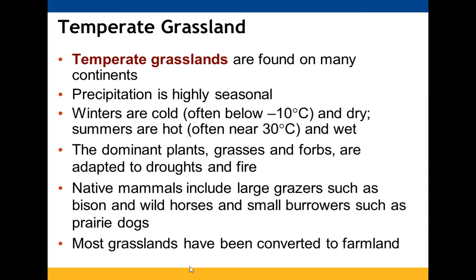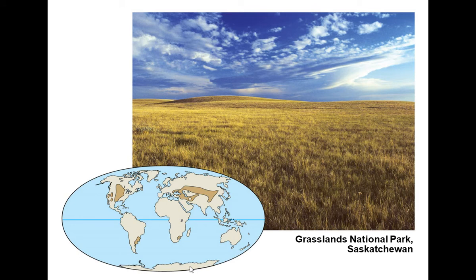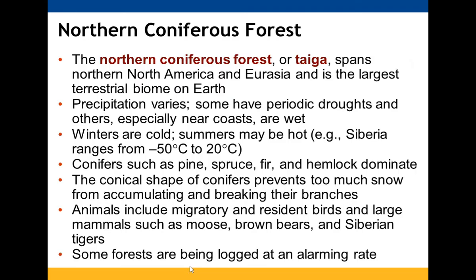Grasslands are found on many continents with highly seasonal precipitation, cold dry winters, and hot wet summers. Dominant plants are grasses and forbs, well adapted to drought and fire. Native mammals include bison, wild horses, and prairie dogs. Much grassland has been converted to farmland. They are distributed across the central US, southeastern South America, parts of Africa, and extensively across the middle of Asia.